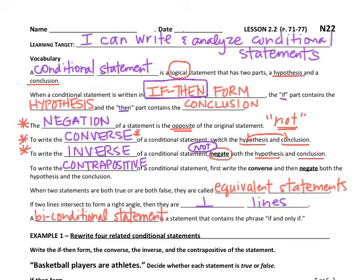The other word to remember is contrapositive. To write the contrapositive, we are first going to write the converse — so we switch — and then we're going to negate both the hypothesis and the conclusion. For the contrapositive, we're doing both: we're negating and we're switching.